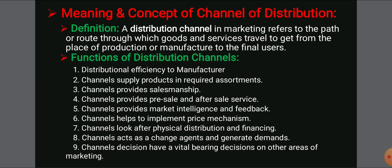The second function of the distribution channel is that channels supply products in the required assortments. For example, a two-wheeler manufacturing company like Bajaj or Hero Moto Corp requires different components — engines, tires, and other accessories — all arriving through different distribution channels. According to their needs, they do the assembly of that particular product.